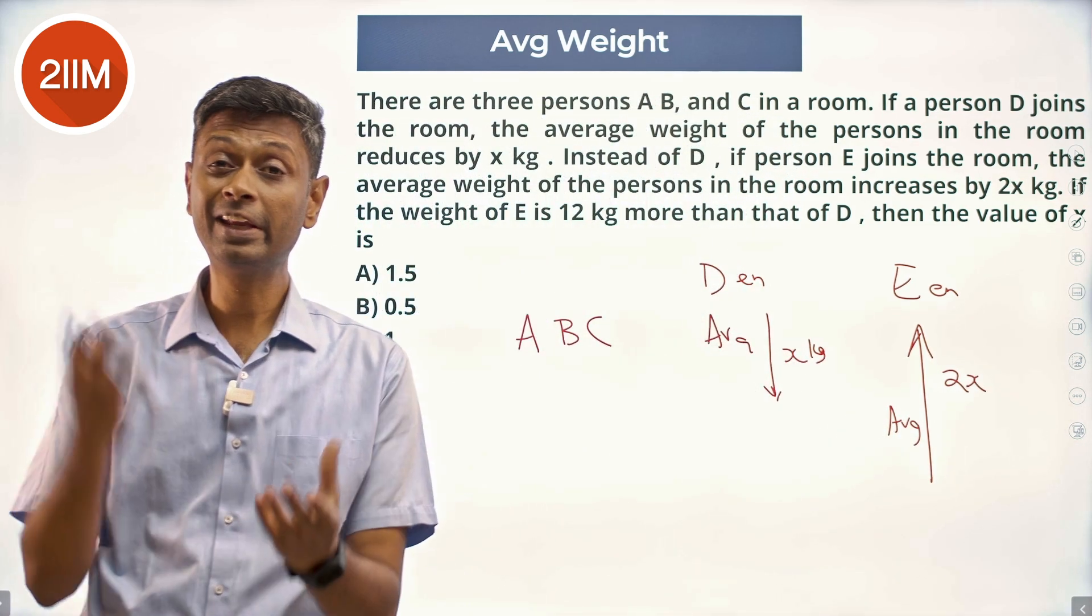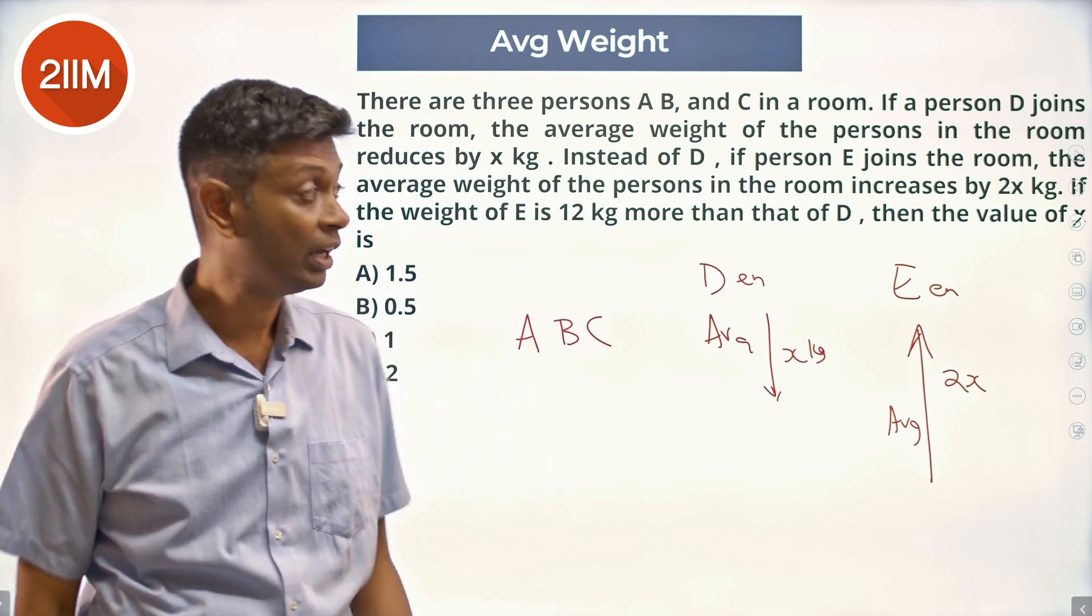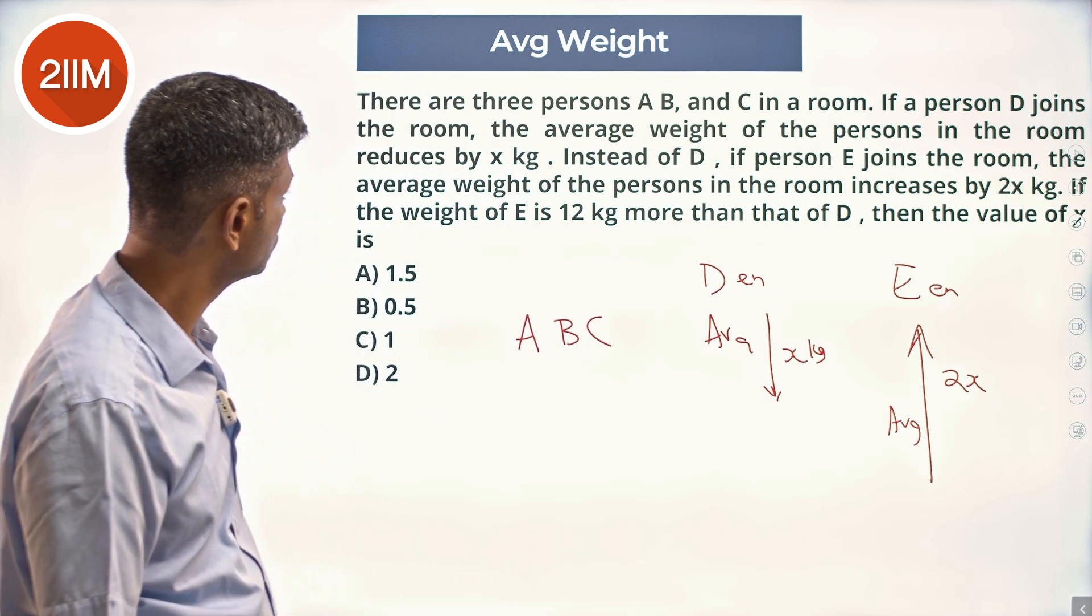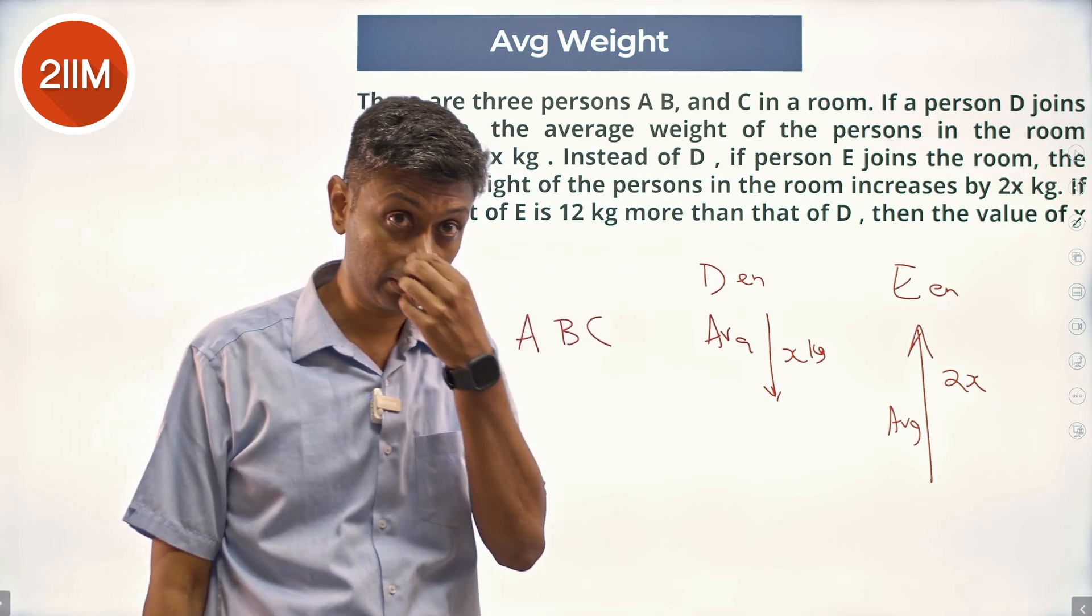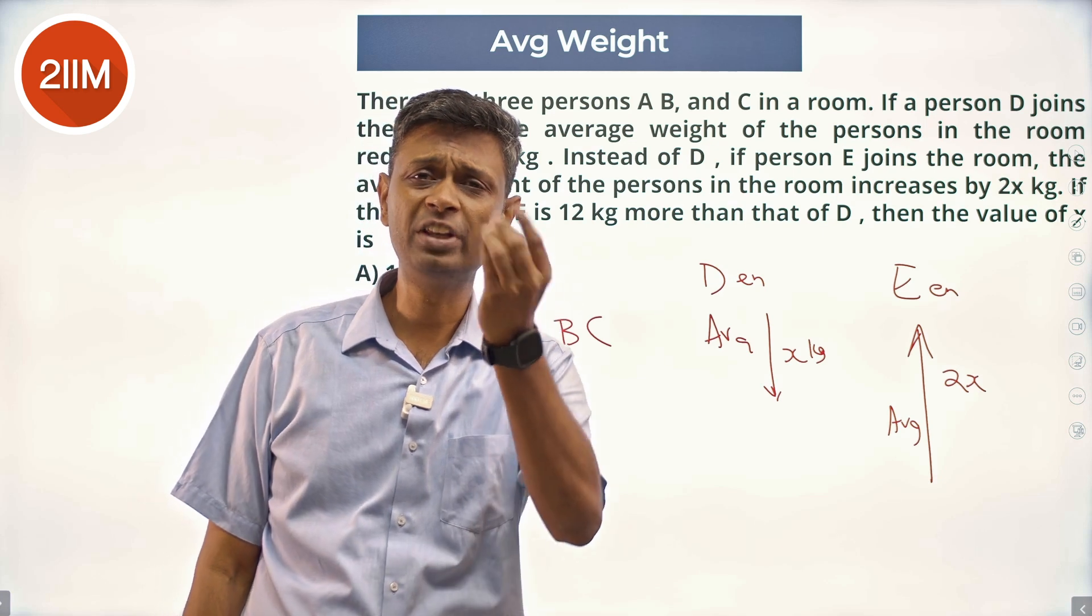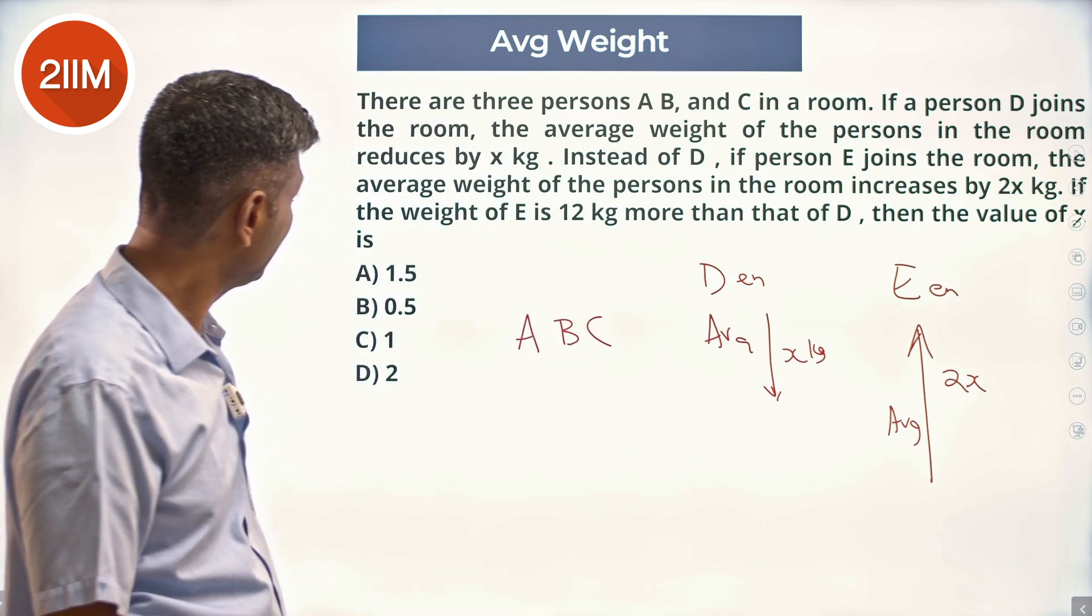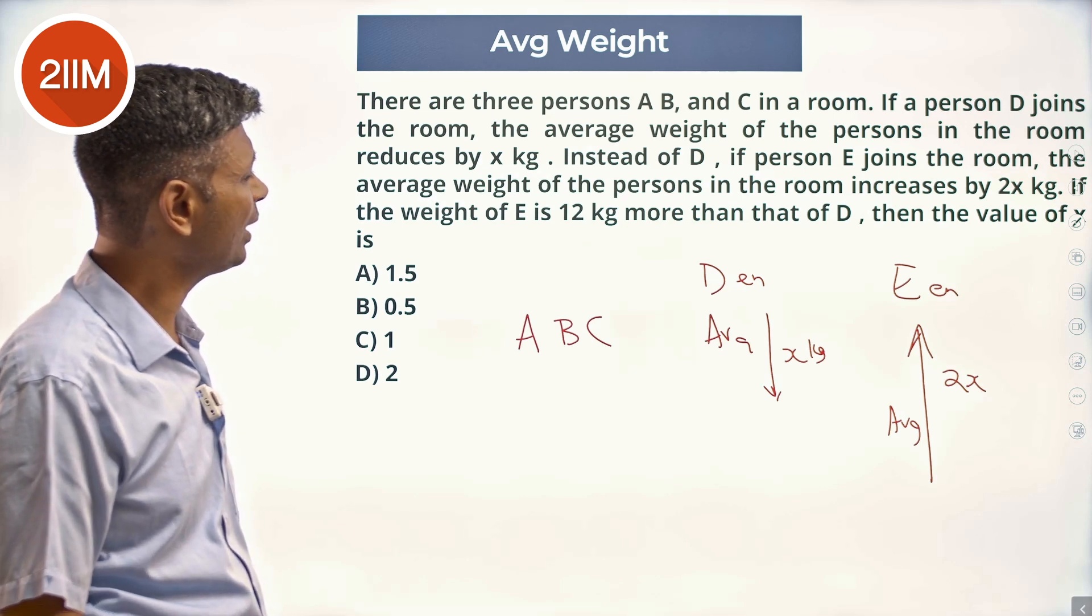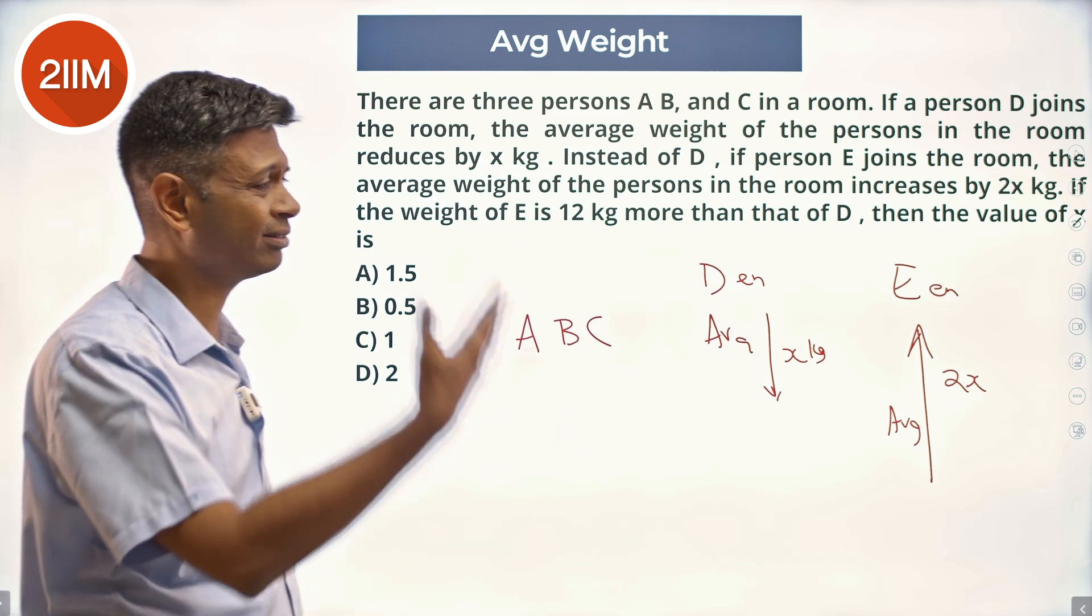So D is bringing in less than the average of A, B, and C, while E is bringing more than the average. Instead of D, if E comes - comparing A, B, C, D versus A, B, C, E - the weight of E is 12 kg more than that of D. Nice simple question.